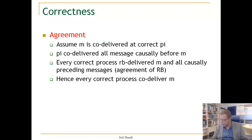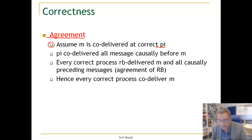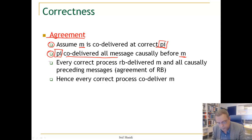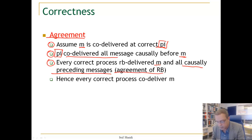Now let us look to agreement. We assume M is causally delivered by some correct process, and our goal is to make sure that M is causally delivered by all correct processes. So if M is causally delivered by a correct process PI, it means that PI has causally delivered all messages causally before M. Which means every correct process has RB delivered M and all causally preceding messages, because of the agreement of reliable broadcast.